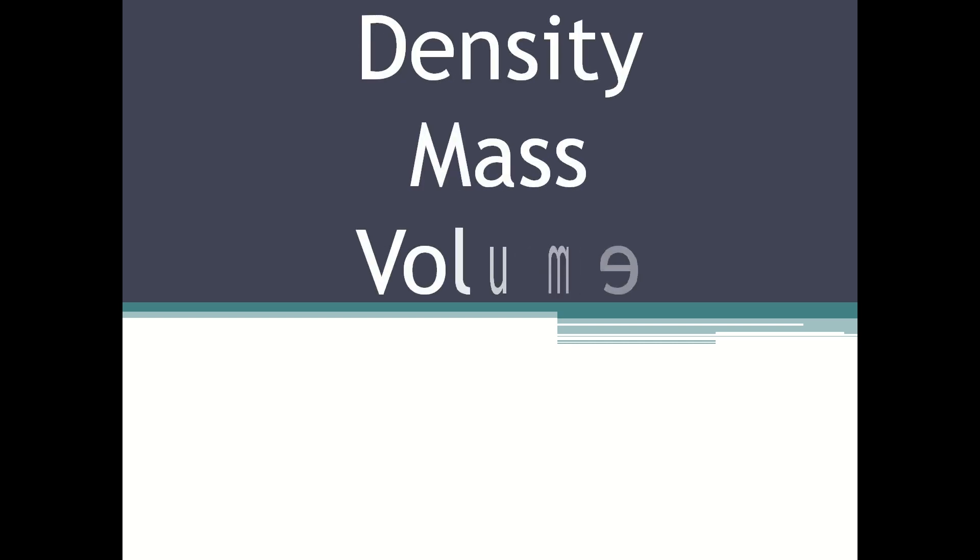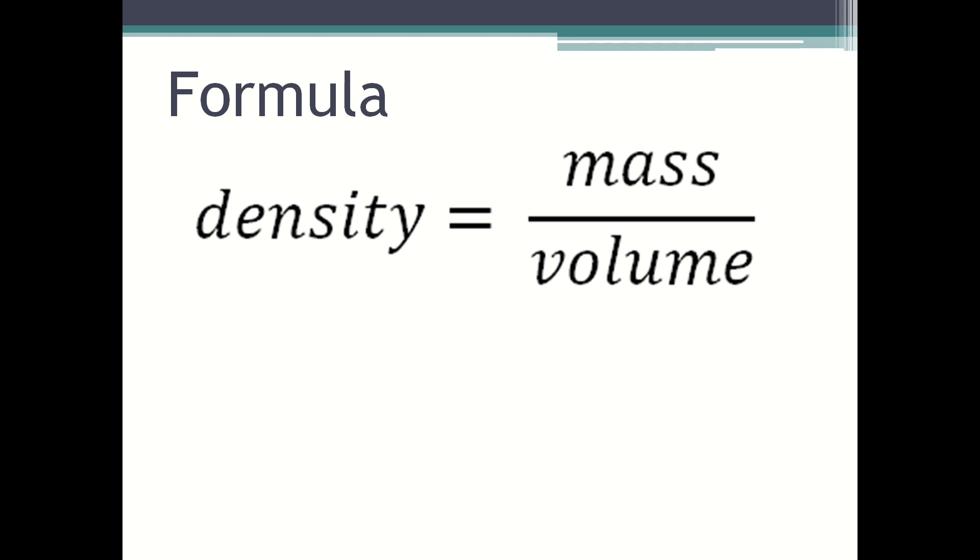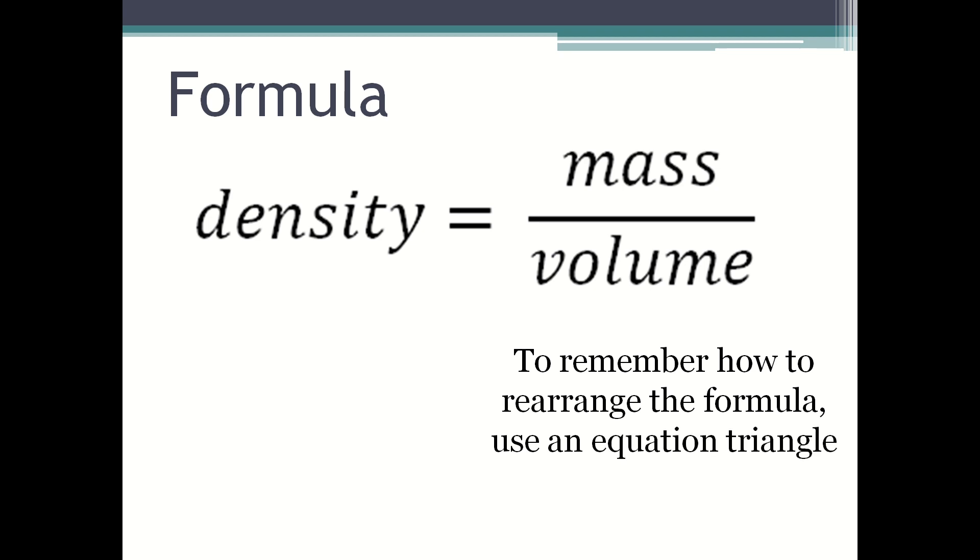The formula for density, mass and volume is density equals mass divided by volume. To remember how to rearrange the formula you can use an equation triangle. Mass is on top, density and volume are at the bottom.